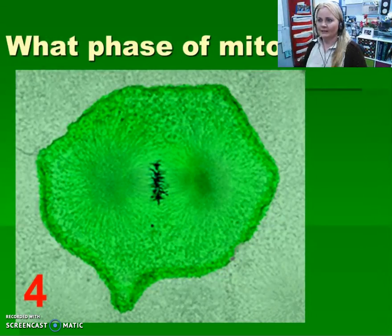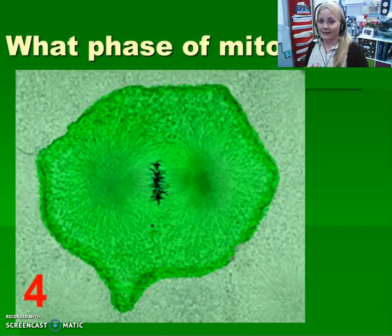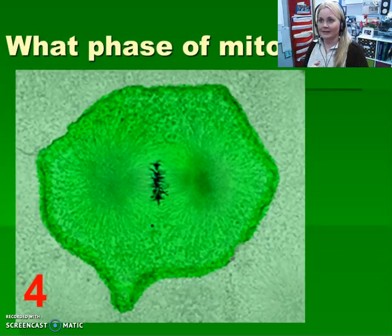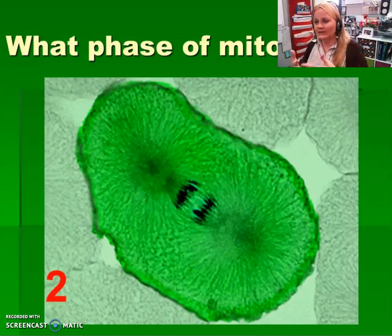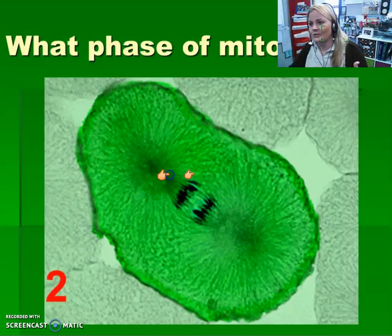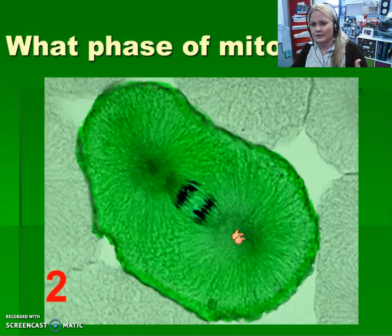What about this one? Metaphase — excellent. This one is easy: the chromosomes line up in the middle — that's metaphase. Now you can almost see the spindle fibers in this next image pulling the chromosomes apart at the centromere. This is anaphase.